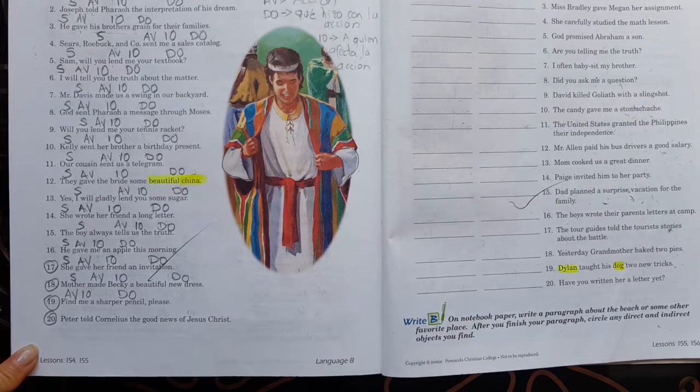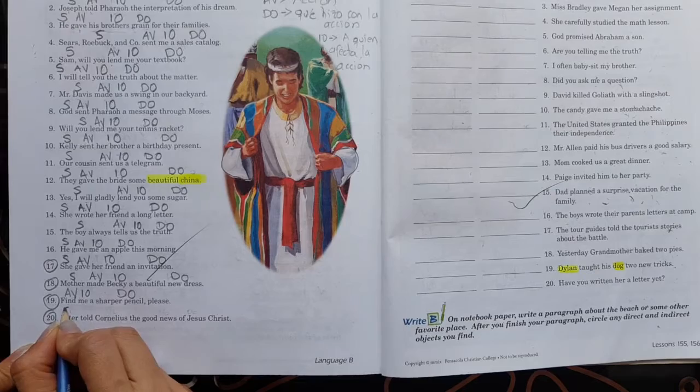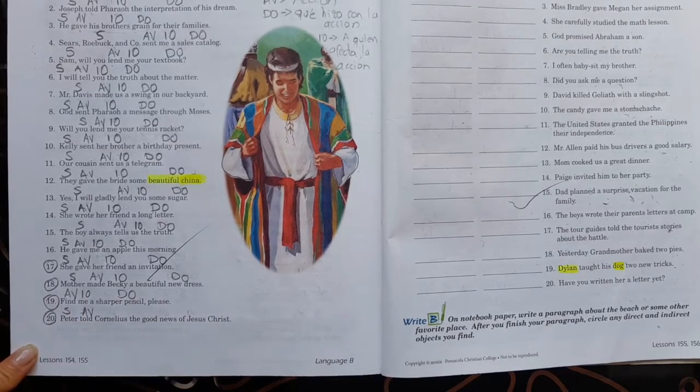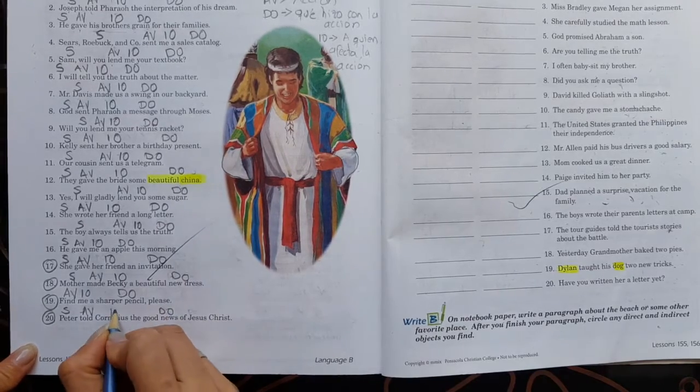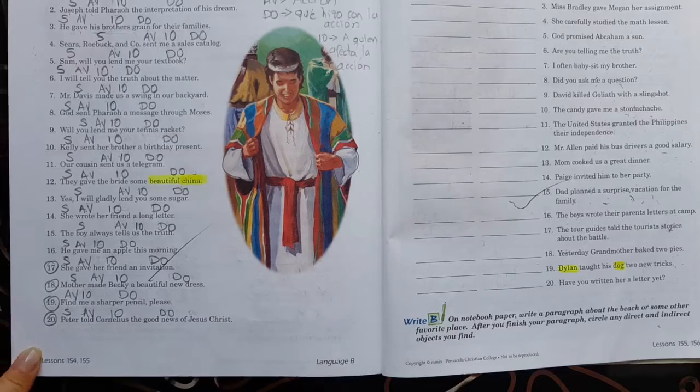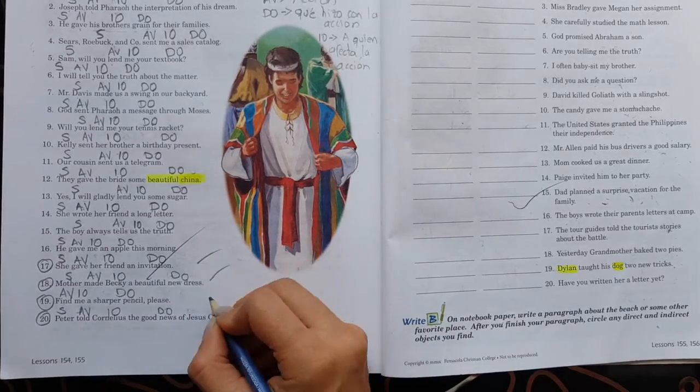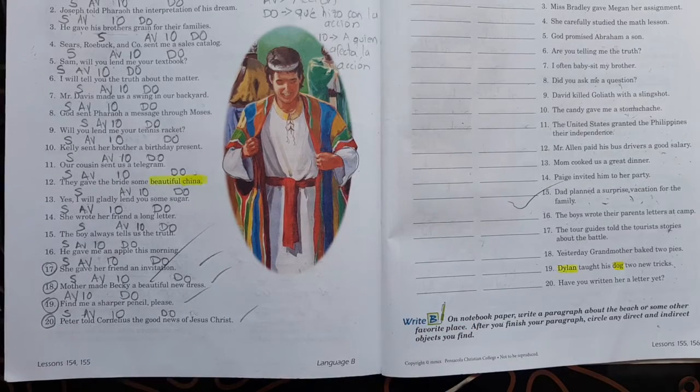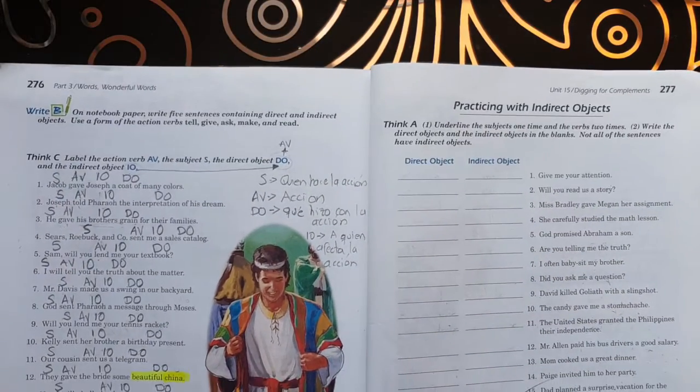Entonces, encuéntrame. Seguramente no hay sujeto. Es you, se asume que es tú, encuéntrame un resaltador. ¿Cuál es el verbo? Encontrar. ¿Encontrar qué? Un resaltador. ¿Y a quién se lo va a encontrar? A mí. Y por último. Peter told Cornelius the good news of Jesus Christ. Pedro le encuentra a Cornelius acerca de las buenas nuevas de Jesucristo. Peter es el que realiza la acción. ¿Qué acción hizo? Dijo. ¿Qué dijo? Las buenas nuevas. ¿A quién se lo dijo? A Cornelius.